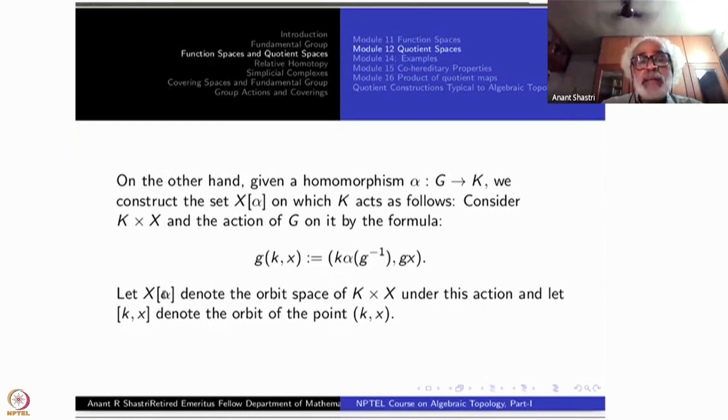Essentially, if you do not write this alpha at all, suppose it is an inclusion map, it is KG inverse GX, like G and G inverse are cancelling out. That is the kind of thing that we are thinking about. Let X alpha denote the orbit space of K cross X under this action. This is going to be a quotient space of K cross X under this action. Let KX denote the orbit of the point K cross X. These are the equivalence classes here.